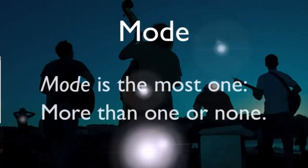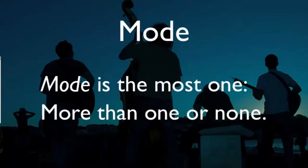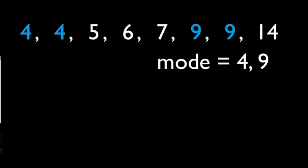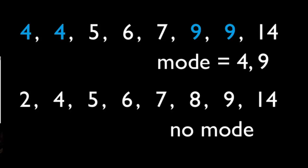Okay, I think we're ready for mode. Mode is the most one, more than one or none. All right, this one's a bit shorter. Let's slow it down. Mode is the most one, more than one or none. Basically, just remember that mode is the number in the data set that repeats itself the most. There can be more than one mode, or there can be no mode. Therefore, mode is the most one, more than one or none.